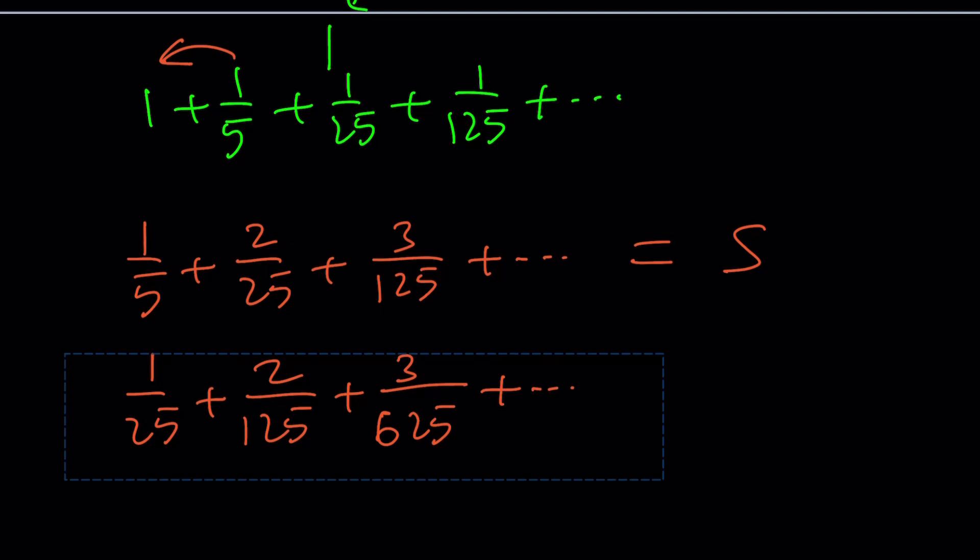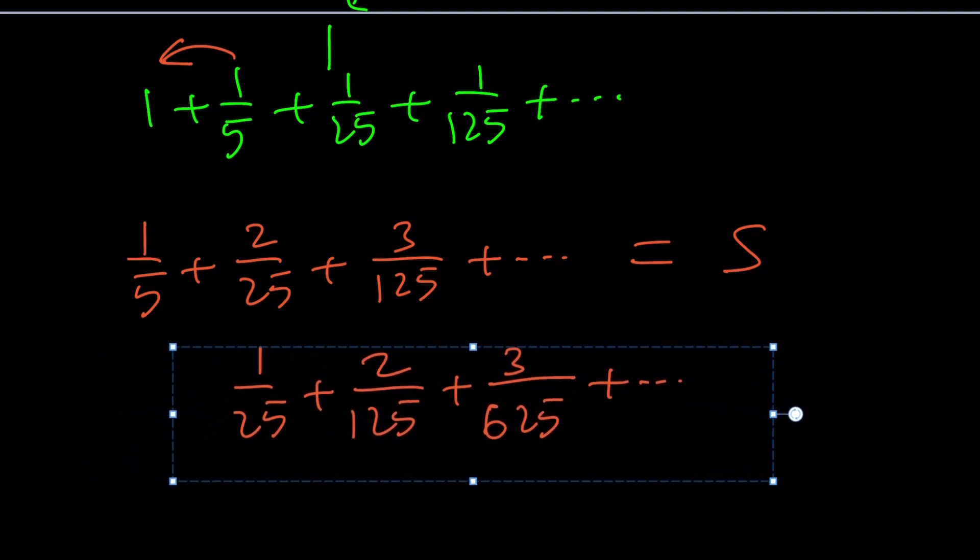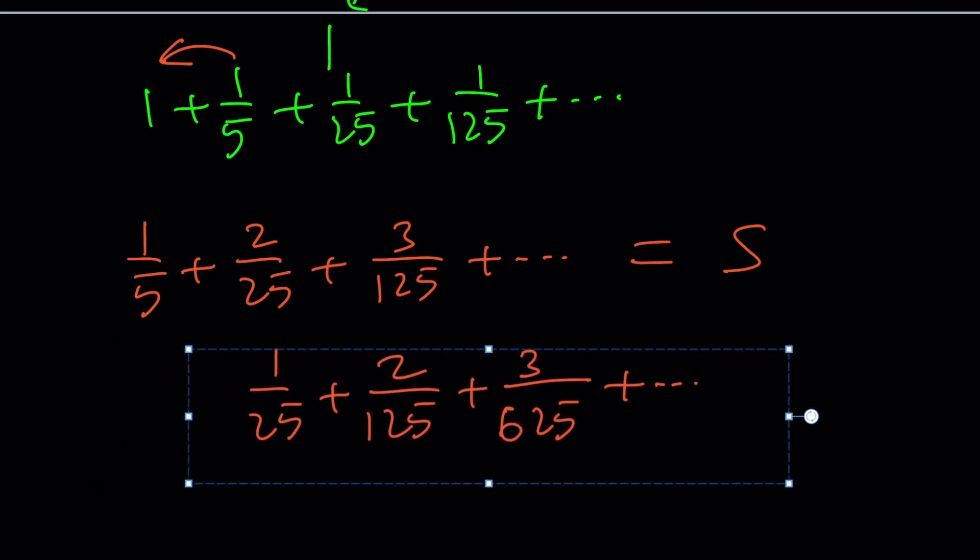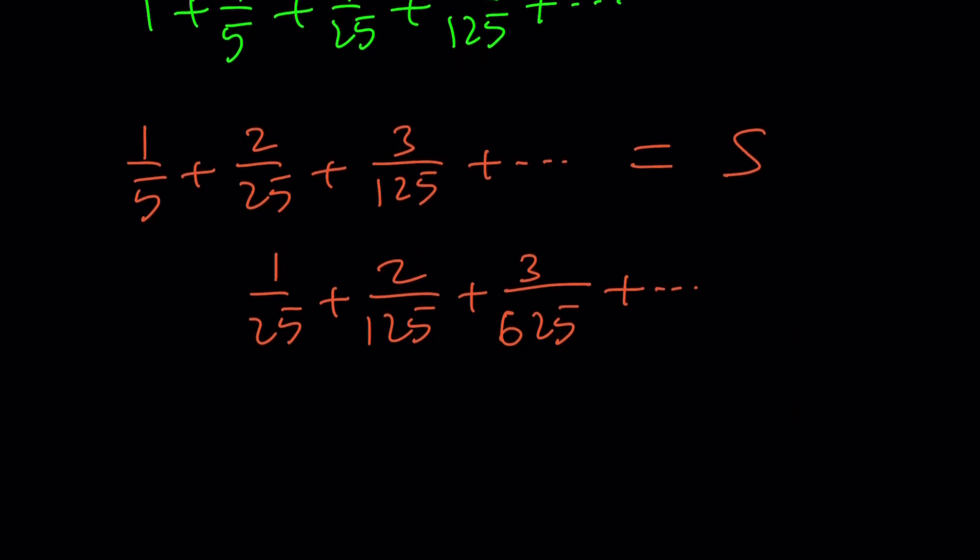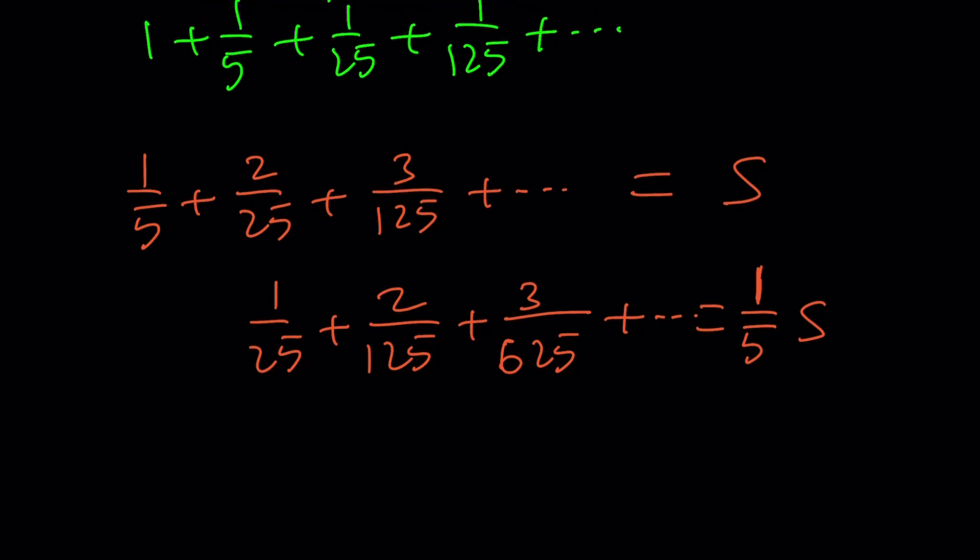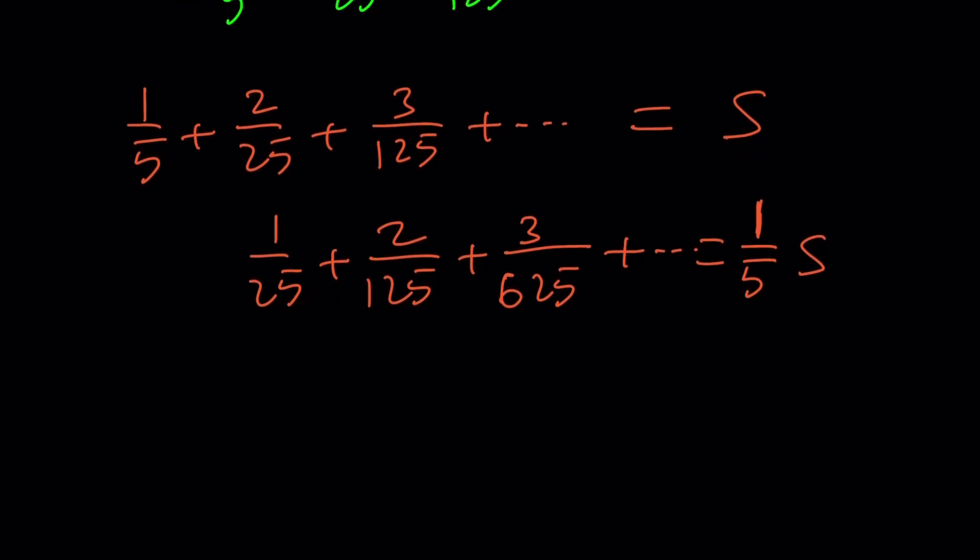You know what? I'd like to move this a little bit to the right, so let's go ahead and line up these terms, sort of, and we can do the following. Obviously, this is 1 over 5 S because I multiply the whole thing by 1 fifth.